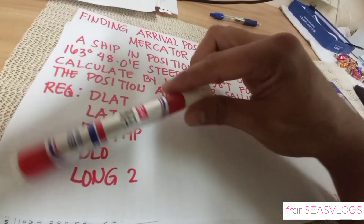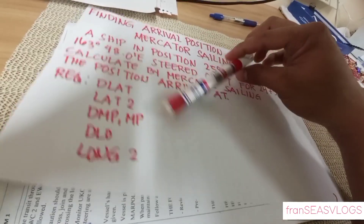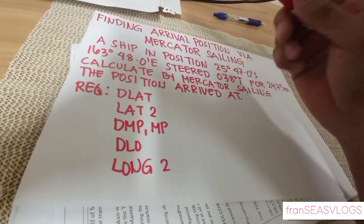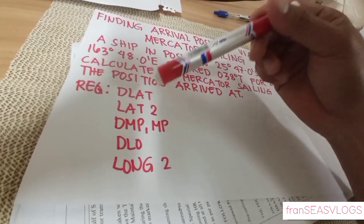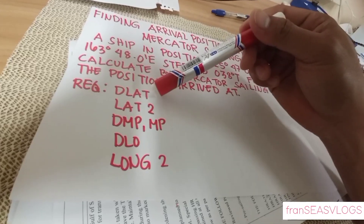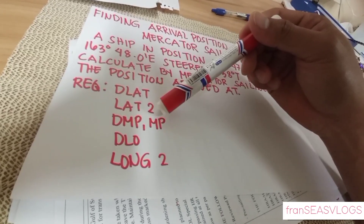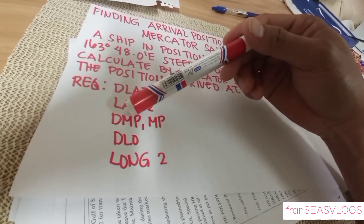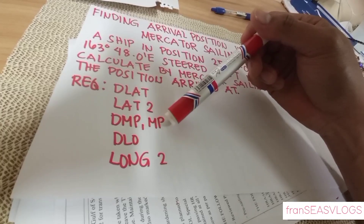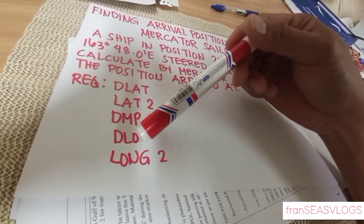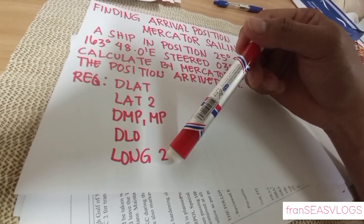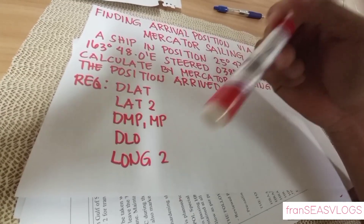And these are the things we need: first, our difference of latitude, latitude 2, difference of meridional parts, meridional parts, difference of longitude, and longitude 2. So let's start the computation.